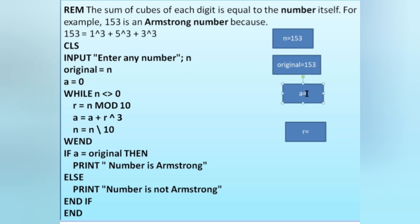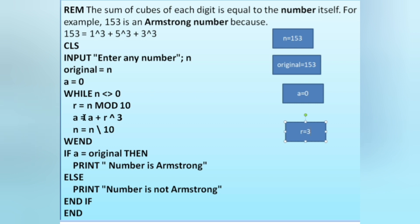The while loop starts: while n not equals 0. With n = 153, the condition is true, so we execute the loop. First, r = n MOD 10, which gives the last digit of 153, so r = 3. Then a = a + r³, meaning 0 + 3³ = 27, so a = 27. Then n = n \ 10 (integer division), removing the last digit, so n becomes 15.